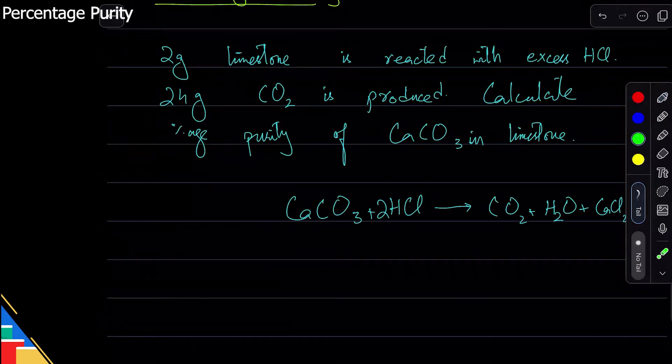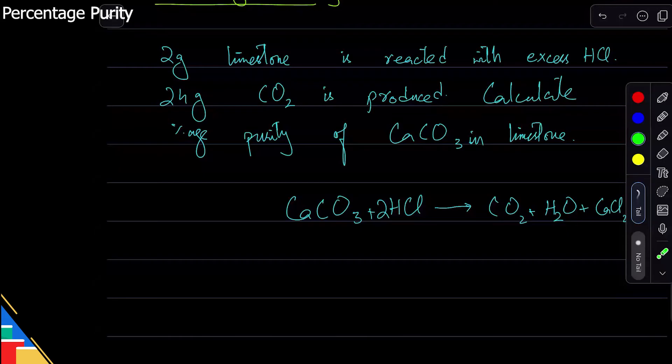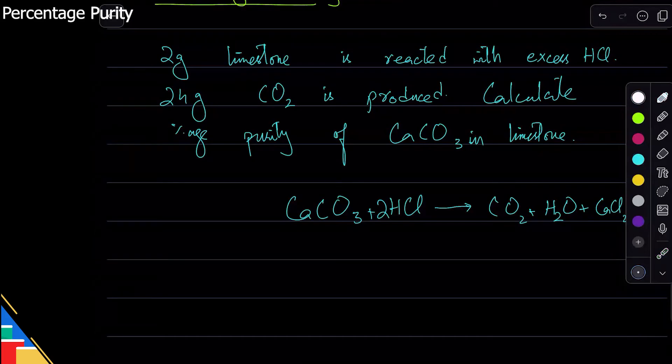So just like in percentage yield I wanted to find yield of ammonia, so I ignored ammonia. I want to find the percentage purity of calcium carbonate, I'll ignore the calcium carbonate amount that they gave me. I will calculate it myself. I don't trust their value, so I'll be like, okay.